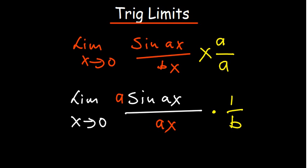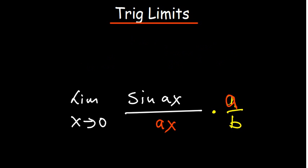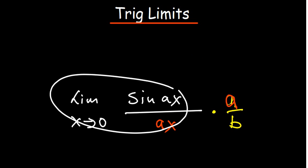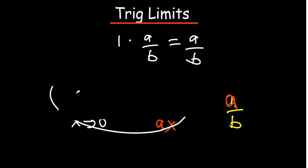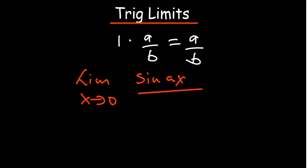Now we have aX in the denominator matching the argument of sine. We can move the 'a' from the denominator out, giving us a over b as a coefficient. This part now matches — what is attached to the sine function and what is on the denominator are the same, so the limit equals one. Therefore, one times a over b equals a over b. The limit as X approaches zero of sine aX over bX equals a over b.